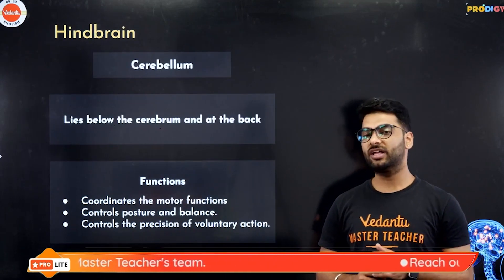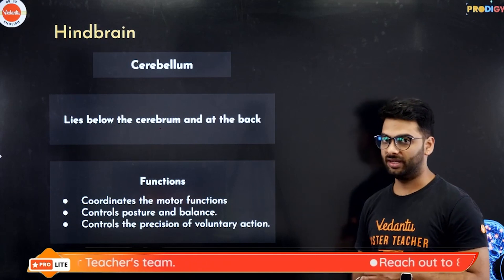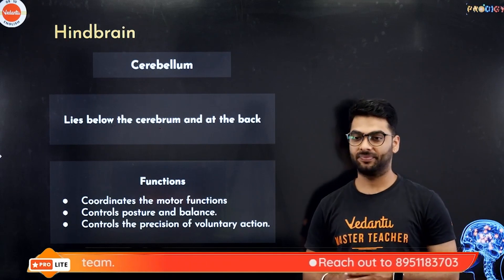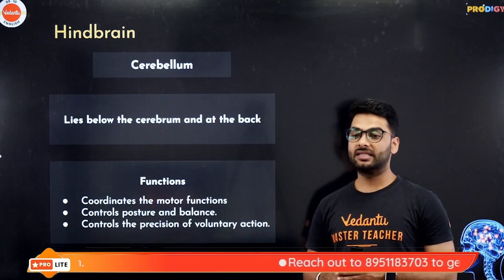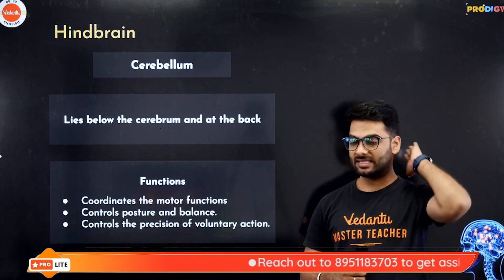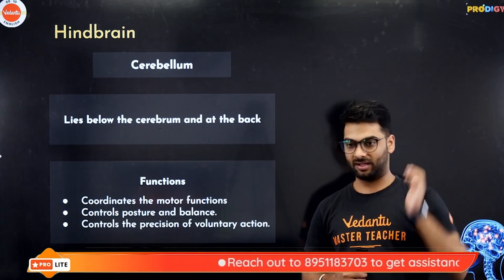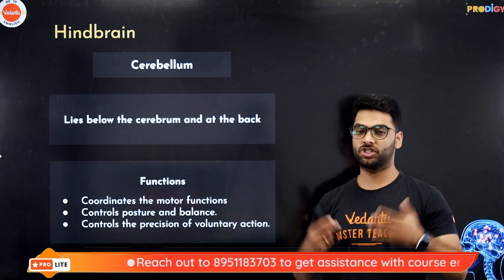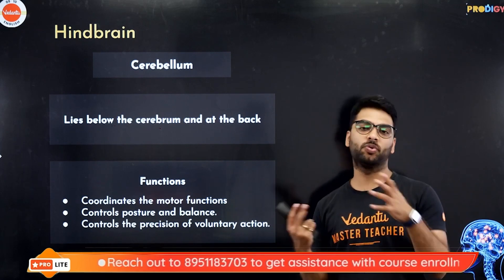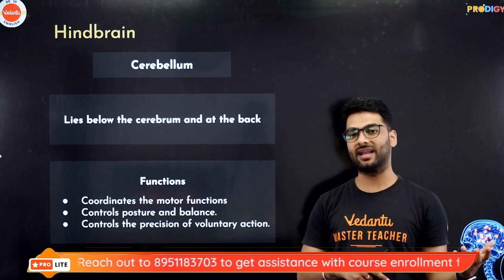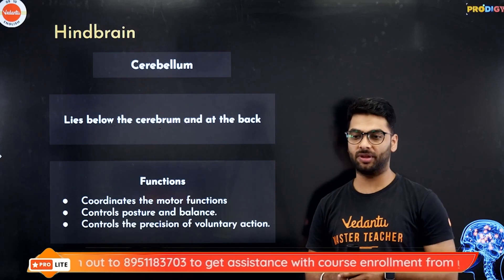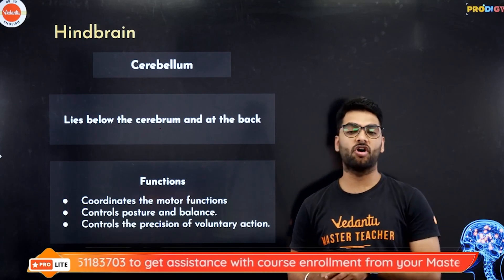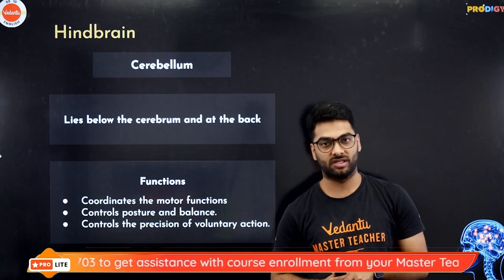Now we come to the hindbrain, which has the cerebellum. The cerebellum lies at the back. It controls motor functions, posture and balance — both static and dynamic equilibrium — and it controls the precision of voluntary actions.